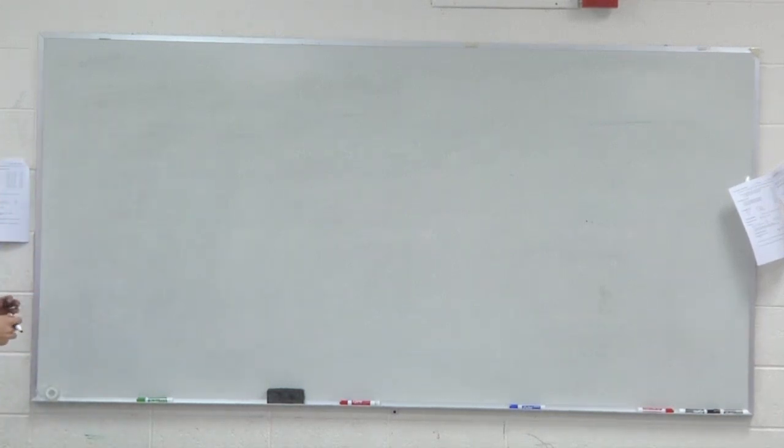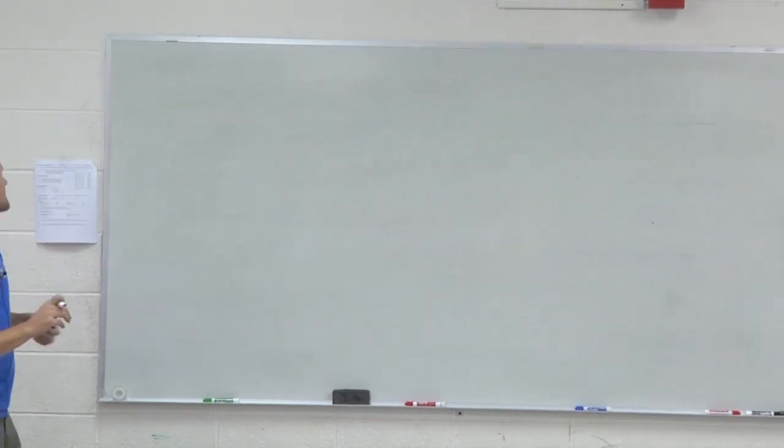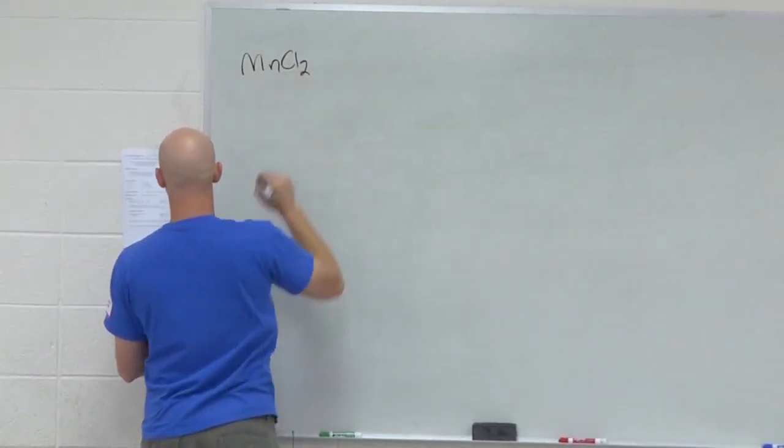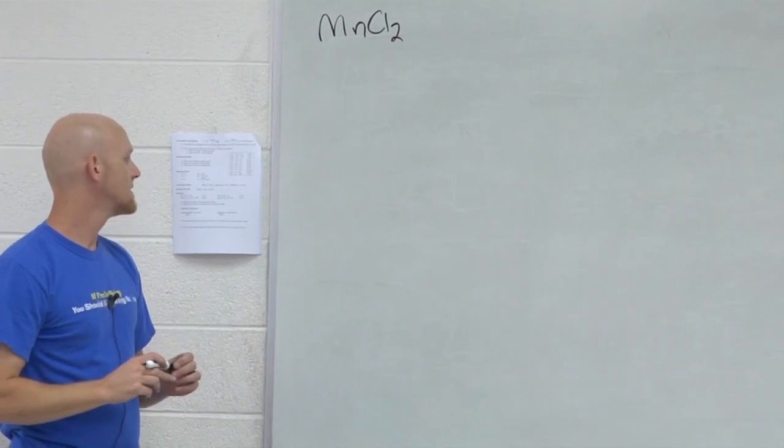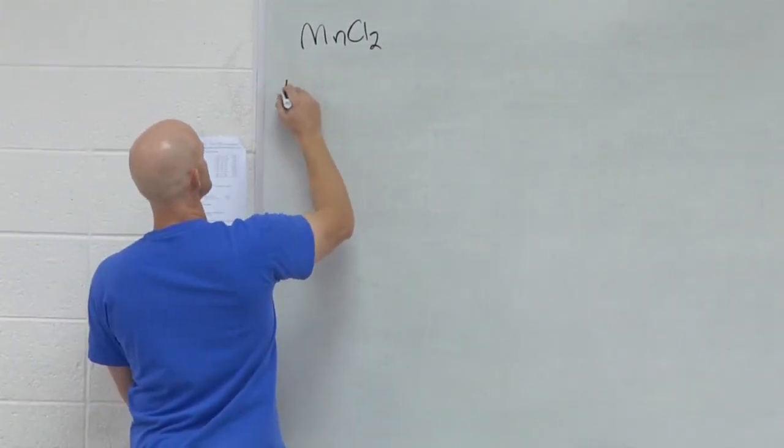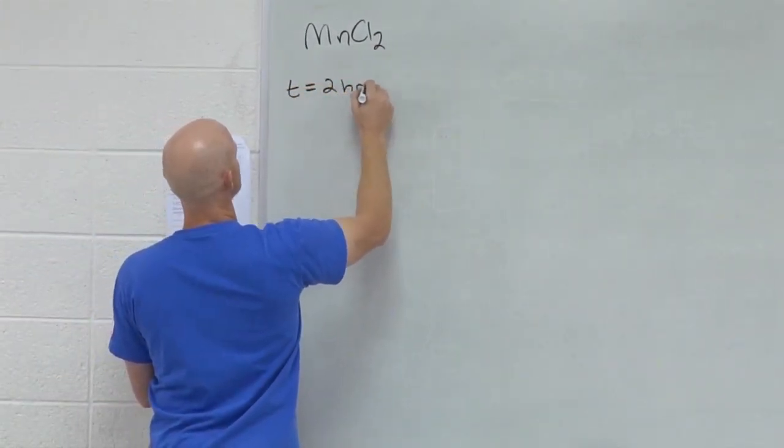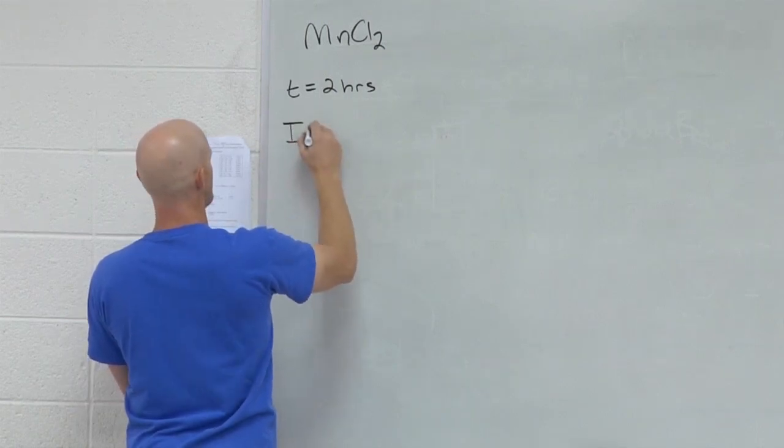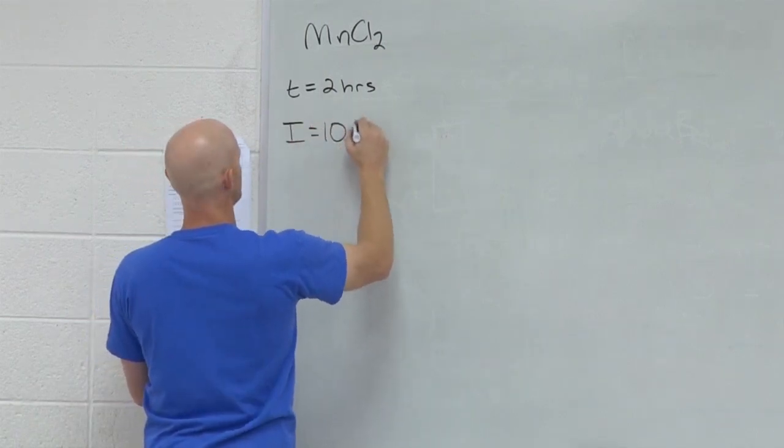So if we look at part A at the very bottom, it says how many moles of Mn will be formed if MnCl2 is electrolyzed for two hours using 10 amps. So T here equals time is two hours and your current, which technically is I, is 10 amps.